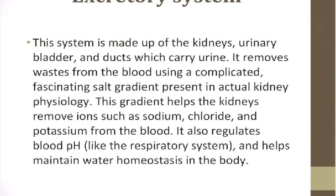The excretory system is made up of the kidneys, urinary bladder, and ducts which carry urine. It removes wastes from the blood using a complicated salt gradient present in kidney physiology. This gradient helps the kidneys remove ions such as sodium, chloride, and potassium from the blood. It also regulates blood pH like the respiratory system and helps maintain water homeostasis in the body.